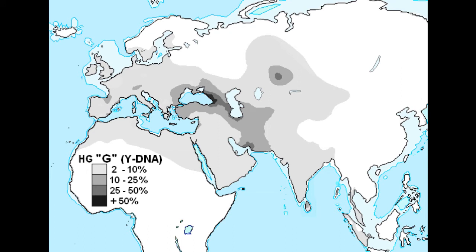Here you can see the other early offshoot, G — one of the two offshoots that split before IJK. The interesting thing here is that you can see there's an area in South Iran, what was formerly Elam, where G is significant — around 25 to 50% in that small coastal area. There is an Elamo-Dravidian hypothesis that suggests that the Elamite and Dravidian languages came from the same place.